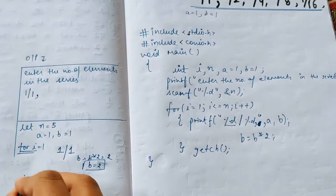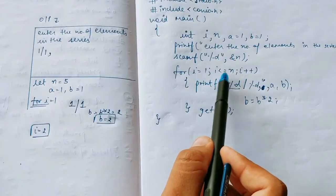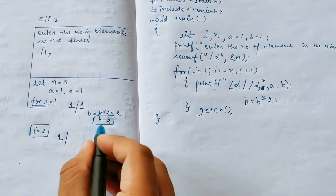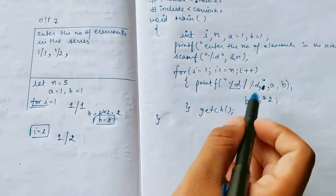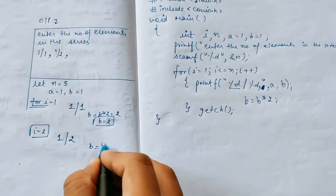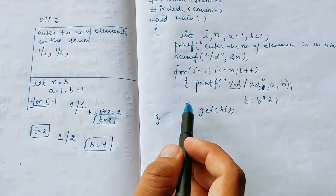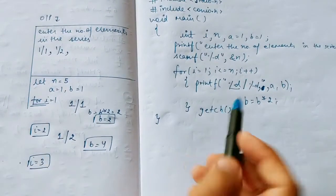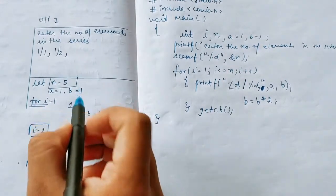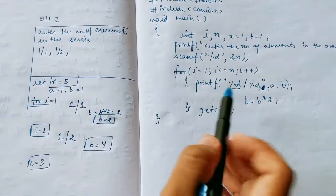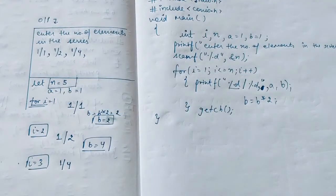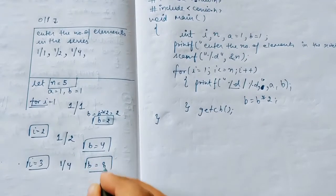i becomes 2; condition 2 ≤ 5 is true. a is still 1, b is 2, so output is '1/2,'. Then b doubles: b = 2 × 2 = 4. i becomes 3; condition 3 ≤ 5 is true. a is 1, b is 4, so output is '1/4,'. Then b doubles again: b = 4 × 2 = 8.